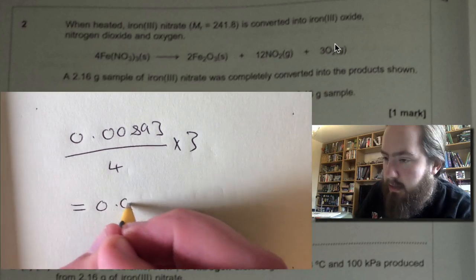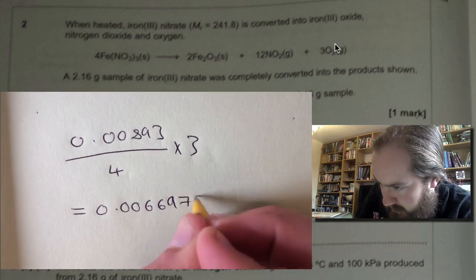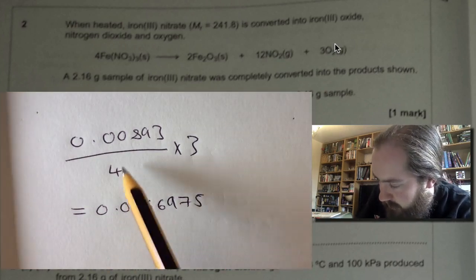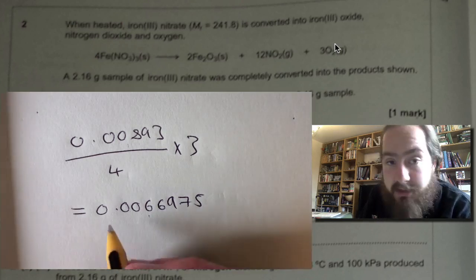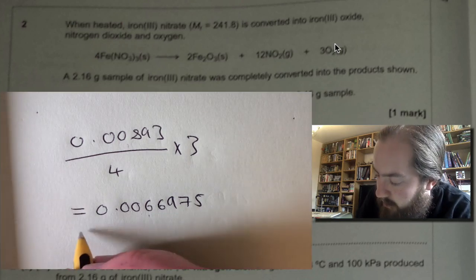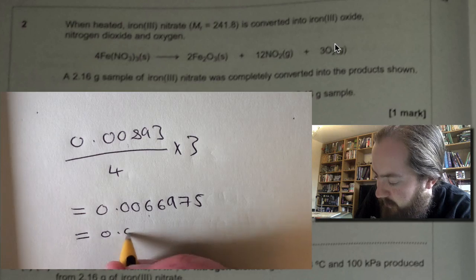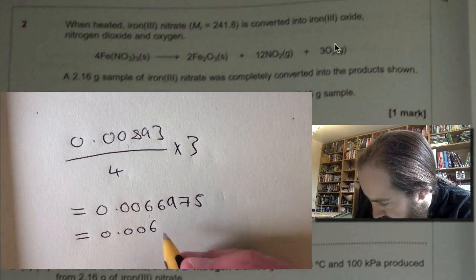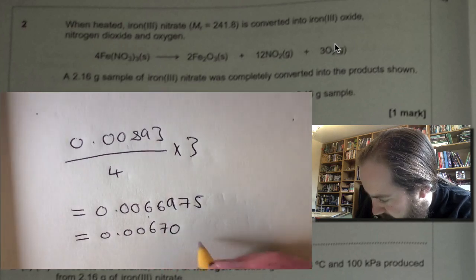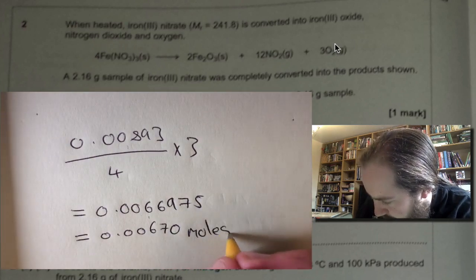So equals 0.0066975, and if we look at this answer it's about three quarters of the original answer, which is about right. And we're just going to make sure we round that up to three significant figures as well, so 0.006 and then our seven is going to round up which will make our nine round up, so it'll be 0.00670 moles.